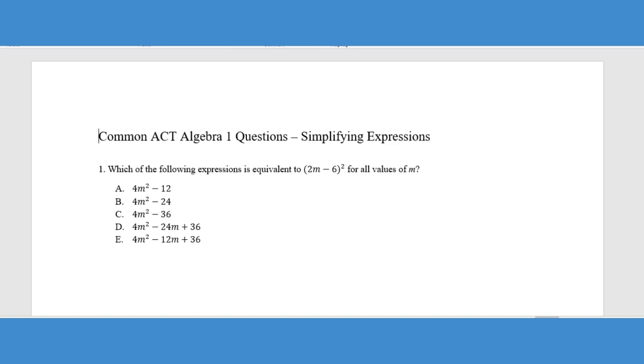For example, X and X squared are not like terms. We couldn't add those together or subtract them. Now we could multiply them together, but that would be more of an exponent property type problem. This list of questions is just going to focus on simplifying expressions, combining like terms, using our basic properties of algebra that we've learned in pre-algebra and doing some simple problems.